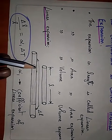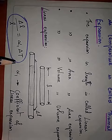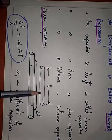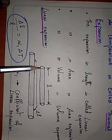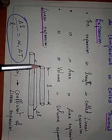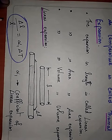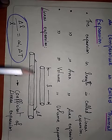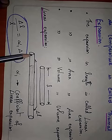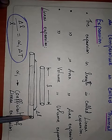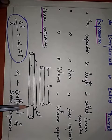First, we will consider linear expansion. So, this is the original length. When we heat this substance of length L, there is a change in length on both sides. This length plus this length is del L. This is the original length L.